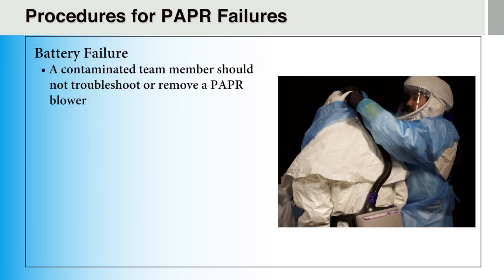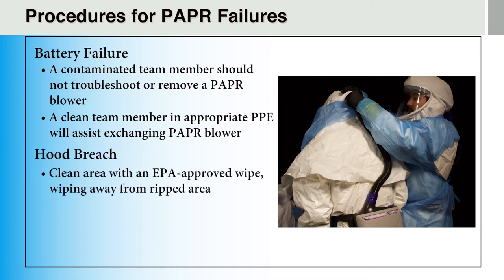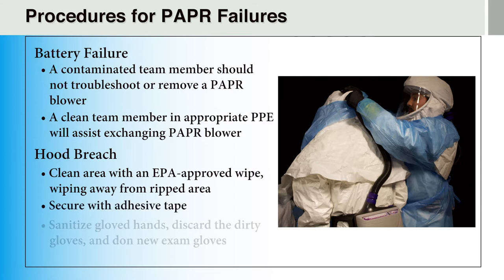In the case of a battery failure of the PAPR, a clean team member should assist in removing and exchanging the PAPR blower. If the hood of the PAPR is breached, the hood should be cleaned with an EPA-approved disinfectant wipe by wiping away from the ripped area, letting it dry, and securing the area with adhesive tape. Afterwards, the provider should sanitize their gloved hands and then immediately discard the gloves in the red biohazard bag, perform hand hygiene with alcohol-based hand sanitizer, and don new gloves.